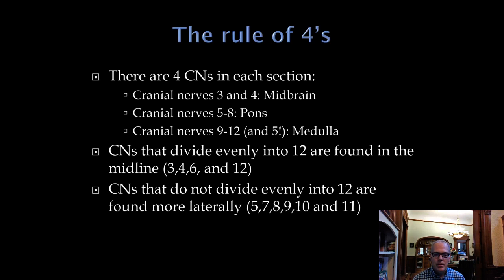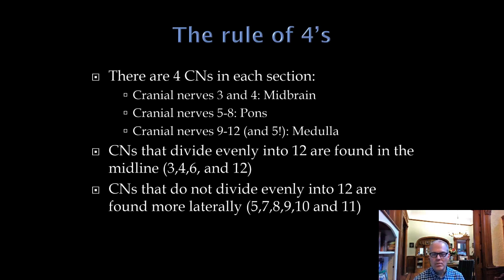The rule of fours says there are four cranial nerves in each section: the midbrain is associated with cranial nerves one through four, pons five through eight, and cranial nerves nine through twelve with the medulla. This is a little inaccurate — cranial nerves one and two are really central nervous system pathways. Cranial nerves three and four are associated with the midbrain, and the trigeminal nerve has a very prominent pathway and nucleus in the medulla, so it's not exclusively associated with the pons.